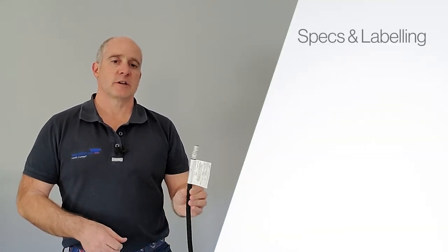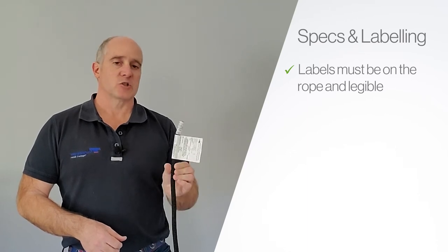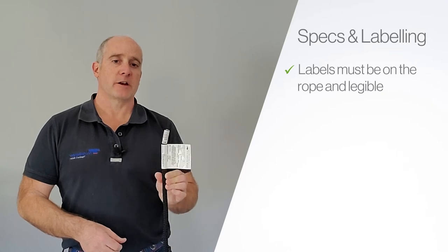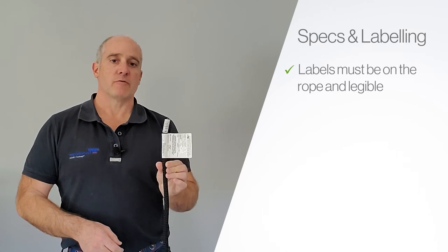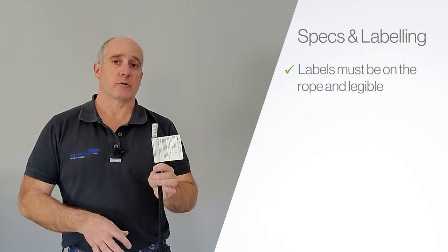So let's start with specs and labeling. When you're looking for specs and labeling, the first thing, obviously, is whether the labels are on the rope and they're legible. These things will wear down, will break down, will come off, so you need to have that information in your rope log so that you can re-label the ropes or have the ropes attached in a bag, something like that, have the labels so you know what those are.